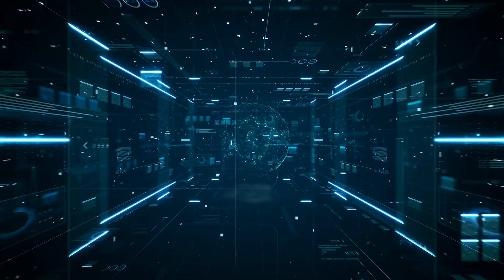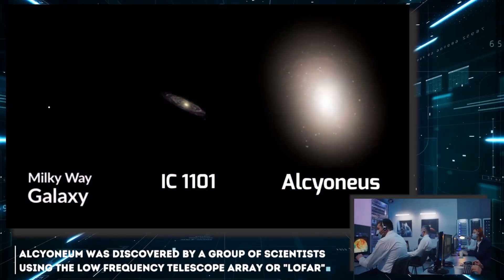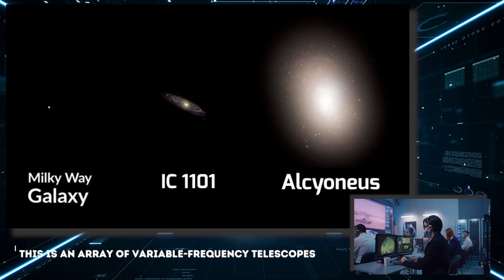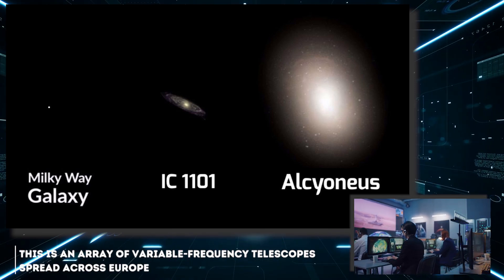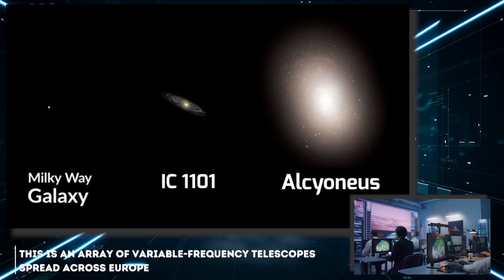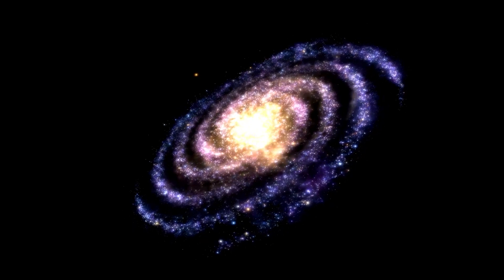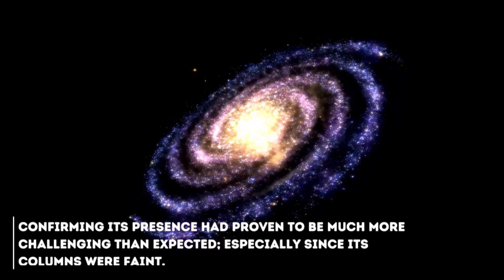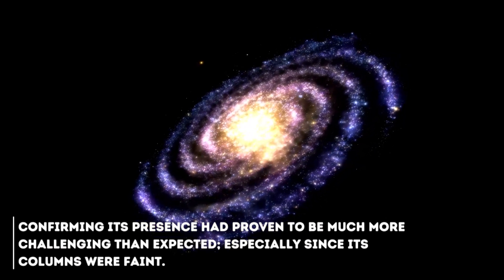At the time, Alcinean was discovered by a group of scientists using the Low Frequency Telescope Array, or LOFAR. This is an array of variable frequency telescopes spread across Europe. Although the existence of Alcinean had been suspected for some time, confirming its presence had proven to be much more challenging than expected.